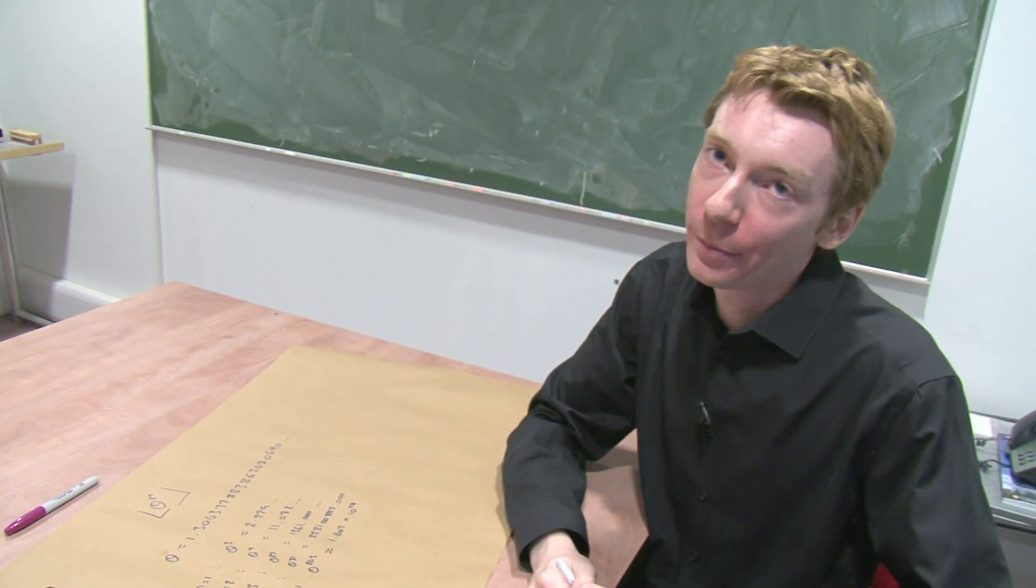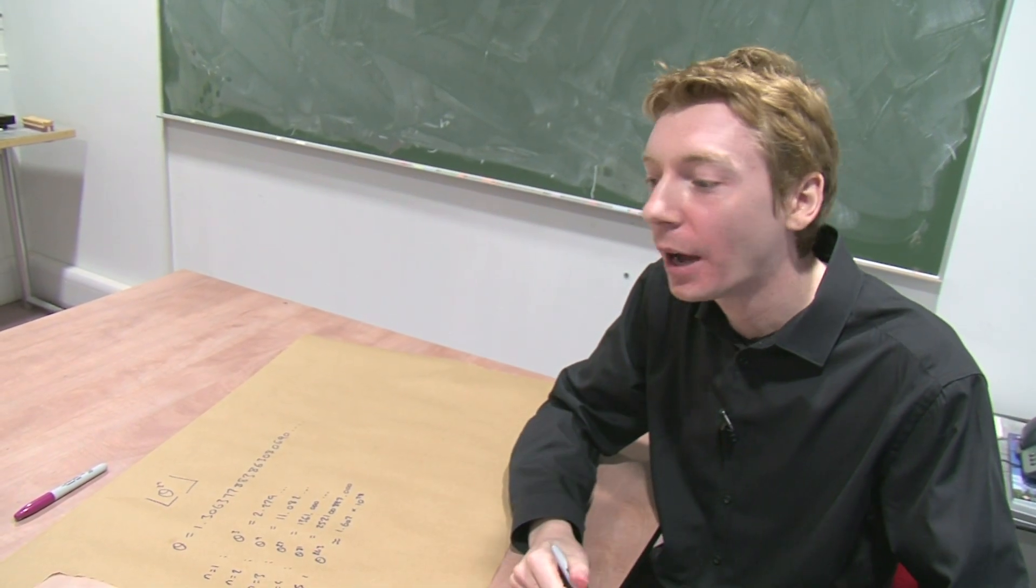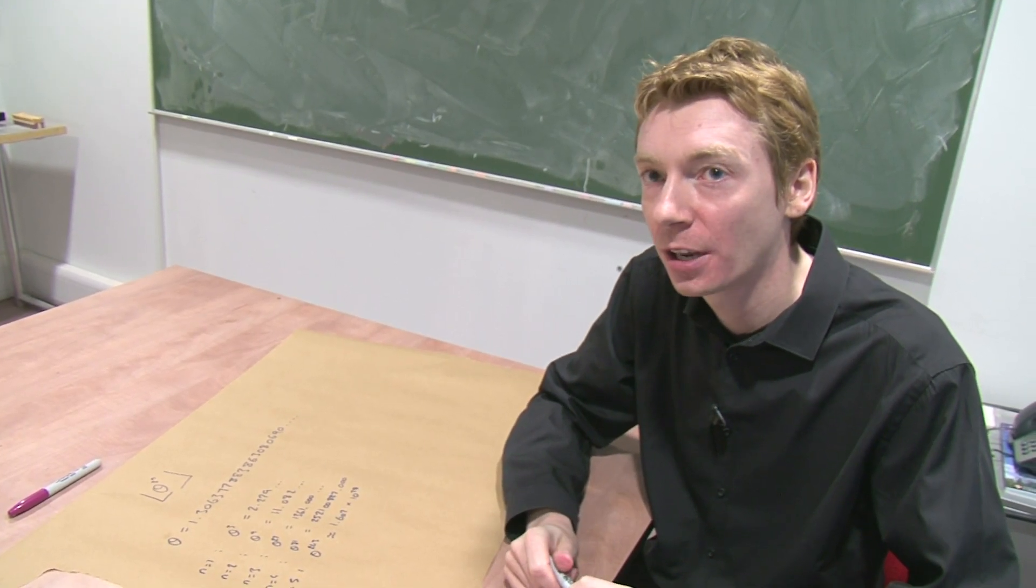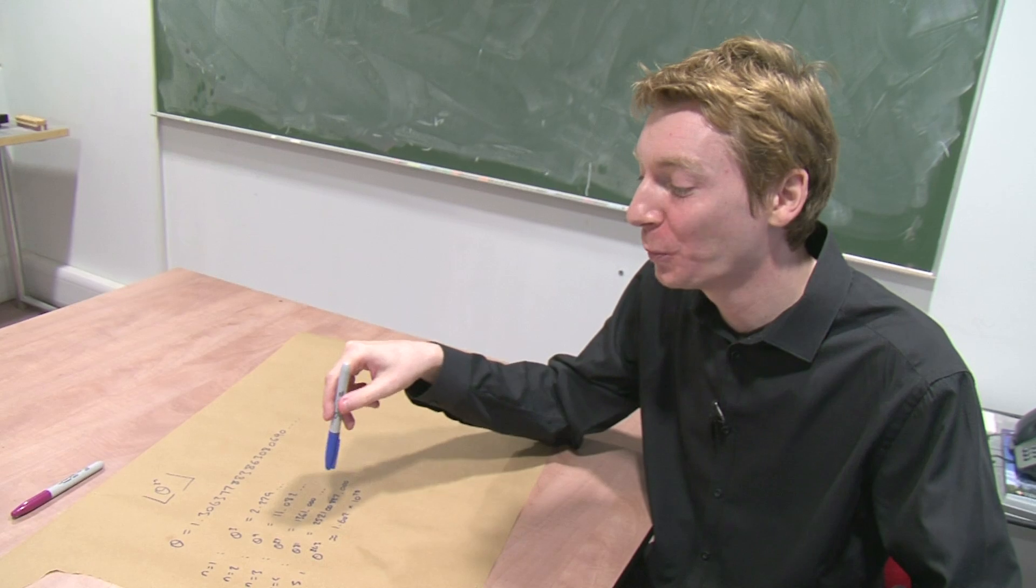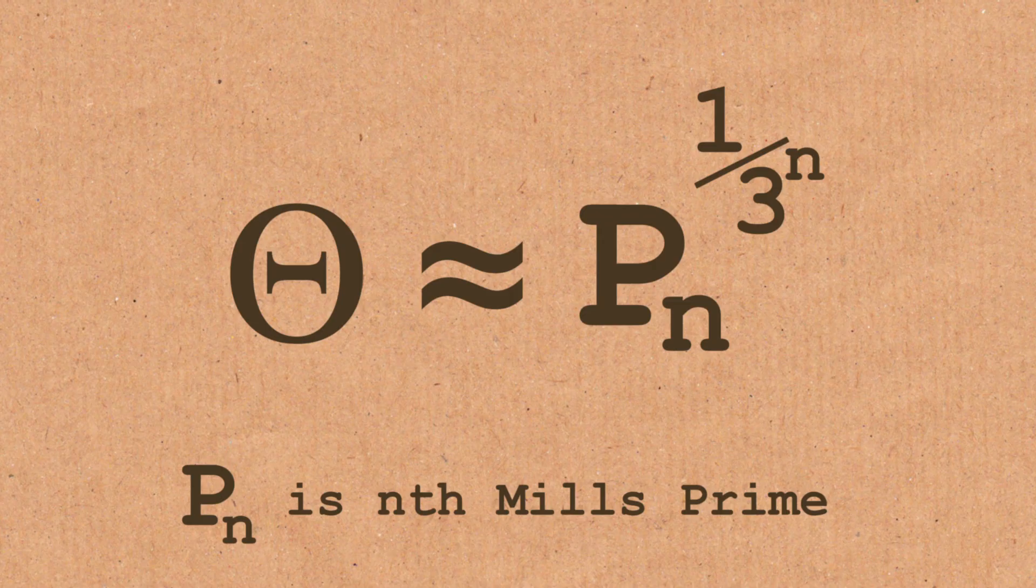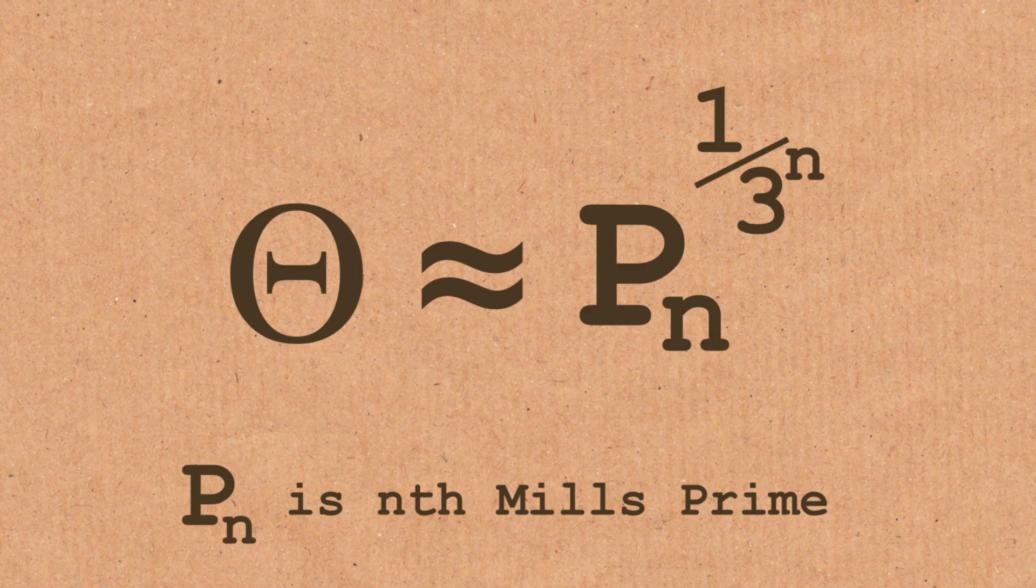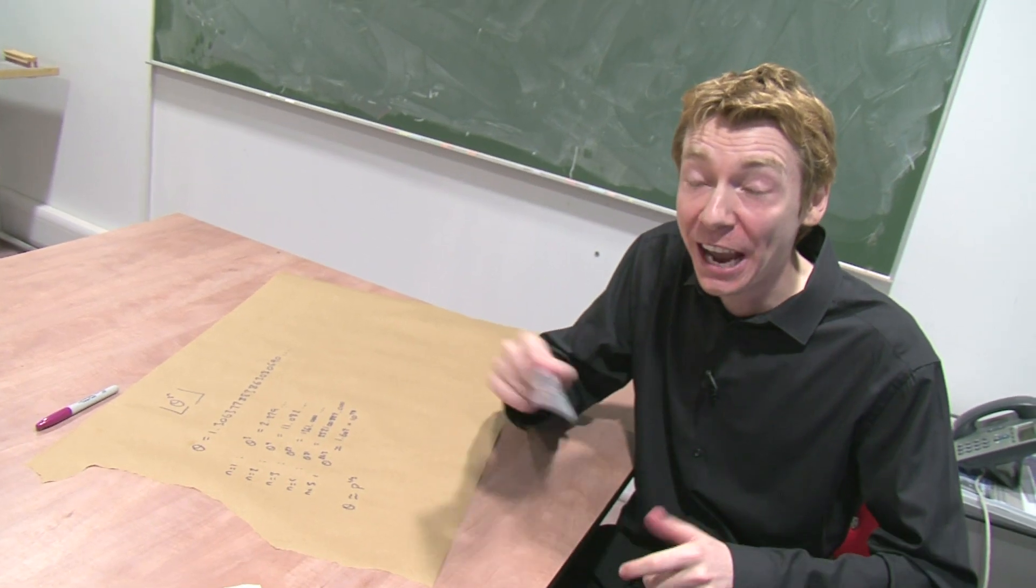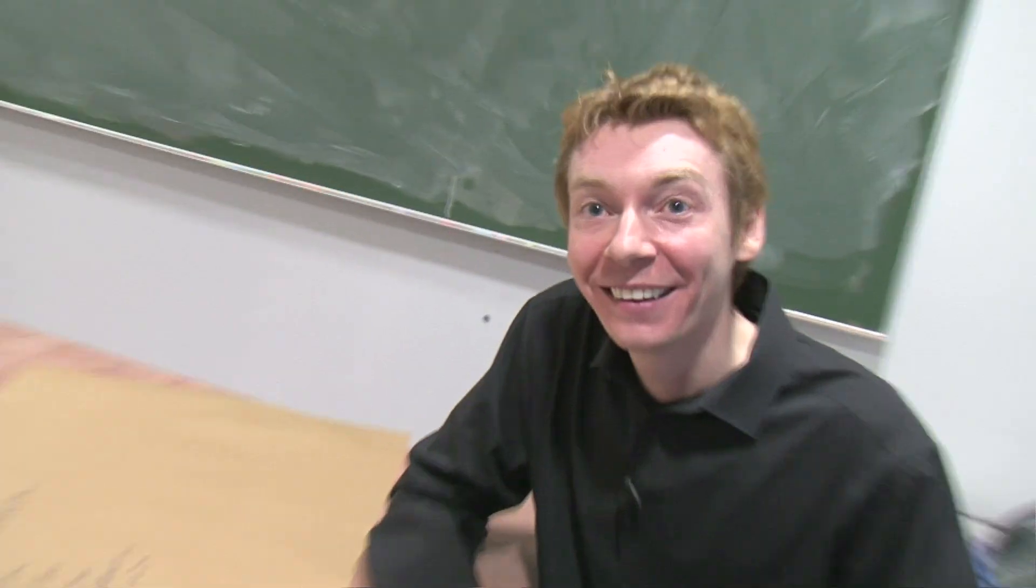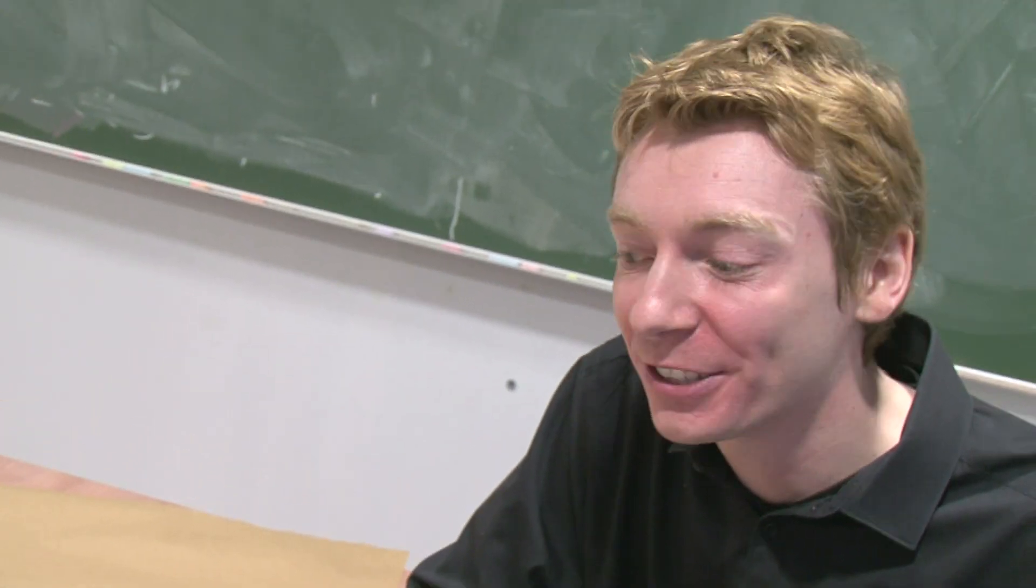One of the other problems with theta is, at the moment, we don't know any way to really work it out apart from taking one of the mill primes. You take one of the mill primes, cube root it, and theta is approximately that. So I'm afraid it's a bit of a circular argument. We haven't got a good way of working out theta. You have to know the primes in the first place to work out theta. Oh, well, I'm not so impressed by it anymore. I know. So you can see why it's not so practical.